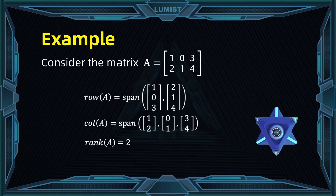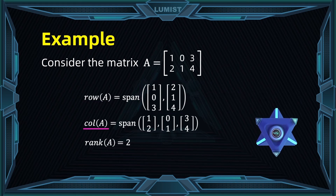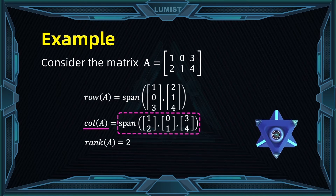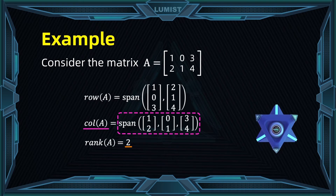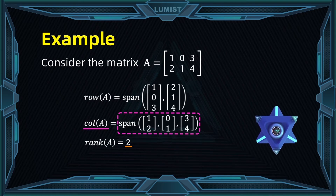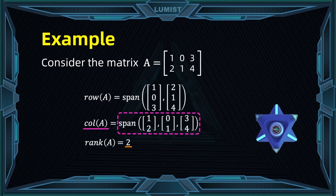However, notice that the column of A is the span of 3 vectors. But if the rank of A is equal to 2, then the dimension of the column of A must also be equal to 2. That means that there is a redundant vector here. In other words, this is not a minimal spanning set.